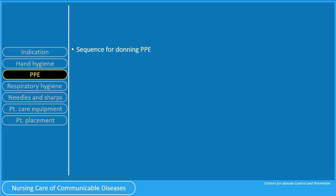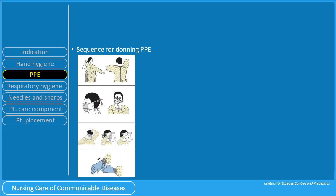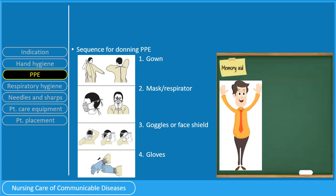One very important concept is that you must don your PPE in sequence. This is an image from the Centers for Disease Control illustrating the proper sequence for donning PPE. We must wear the gown first, then the mask or respirator, the goggles or face shield, and then finally the gloves. A very easy way to memorize the sequence is to imagine a man with his hands raised, and imagine donning the PPE from bottom to top: start by covering the body with the gown, then the mouth and nose with the mask, followed by eye protection with goggles, and lastly the gloves.